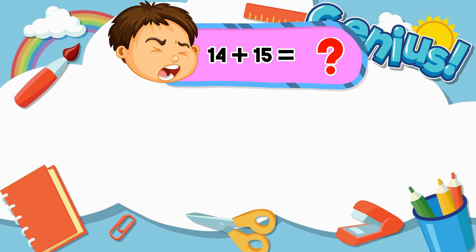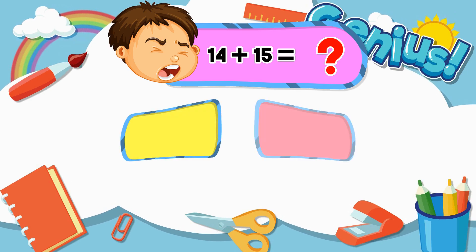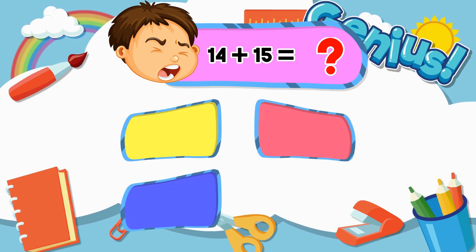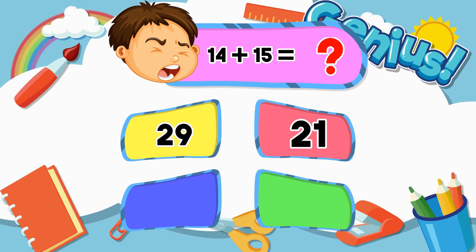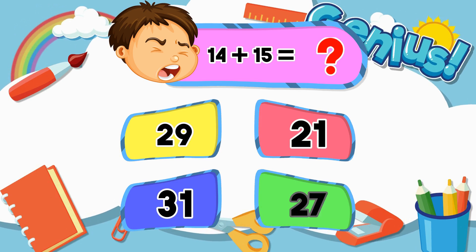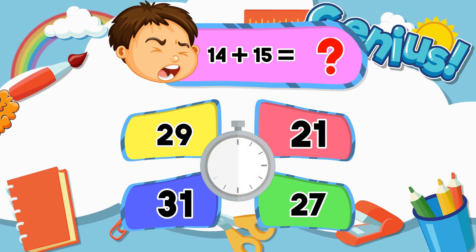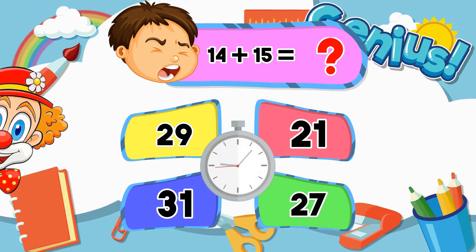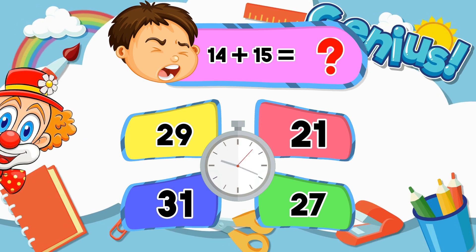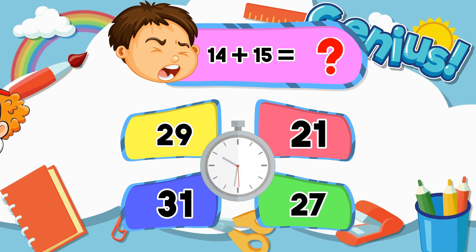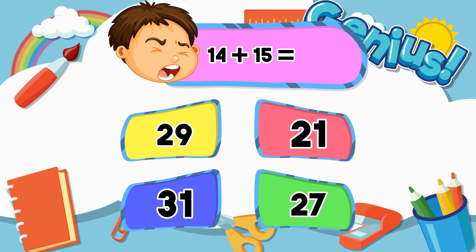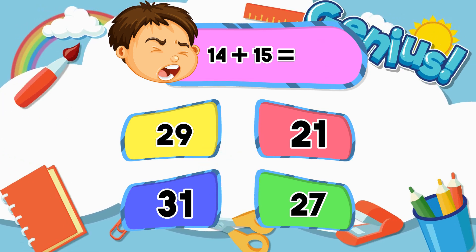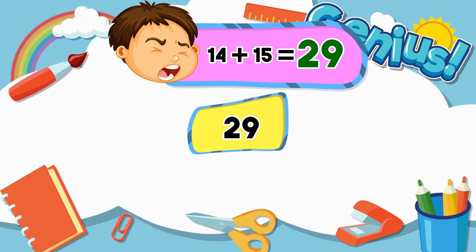What is fourteen plus fifteen? Twenty-nine. Twenty-one. Thirty-one. Twenty-seven. Twenty-nine.